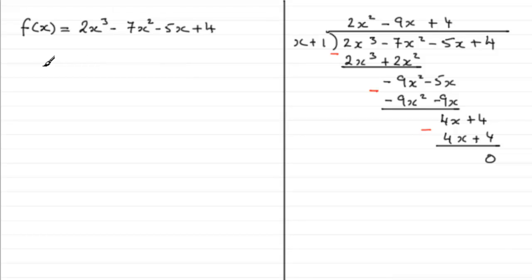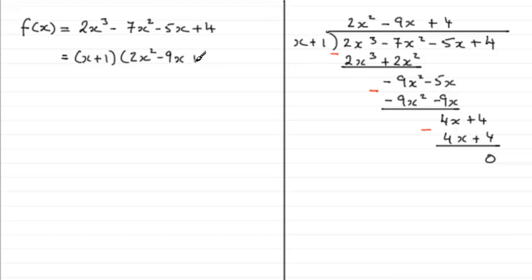In other words, f(x) equals x+1 multiplied by the quadratic factor 2x²-9x+4. And because it says factorise f(x) completely, it does seem to suggest that the quadratic factor factorises again.